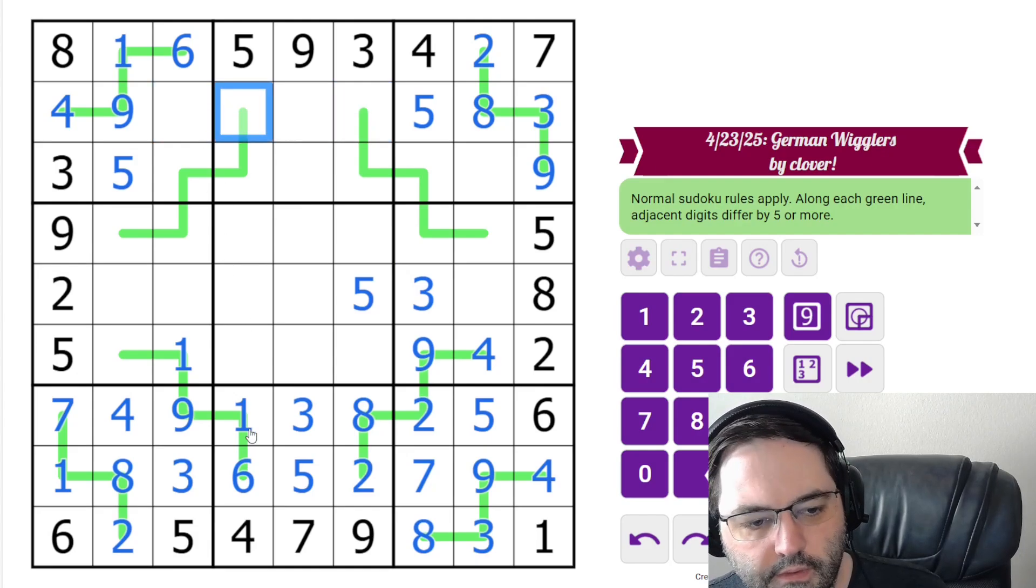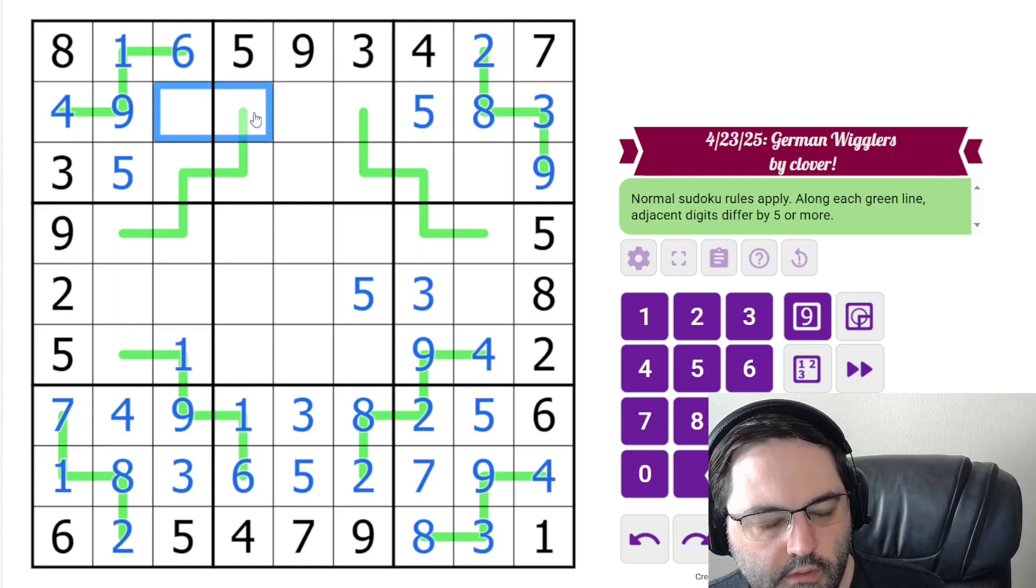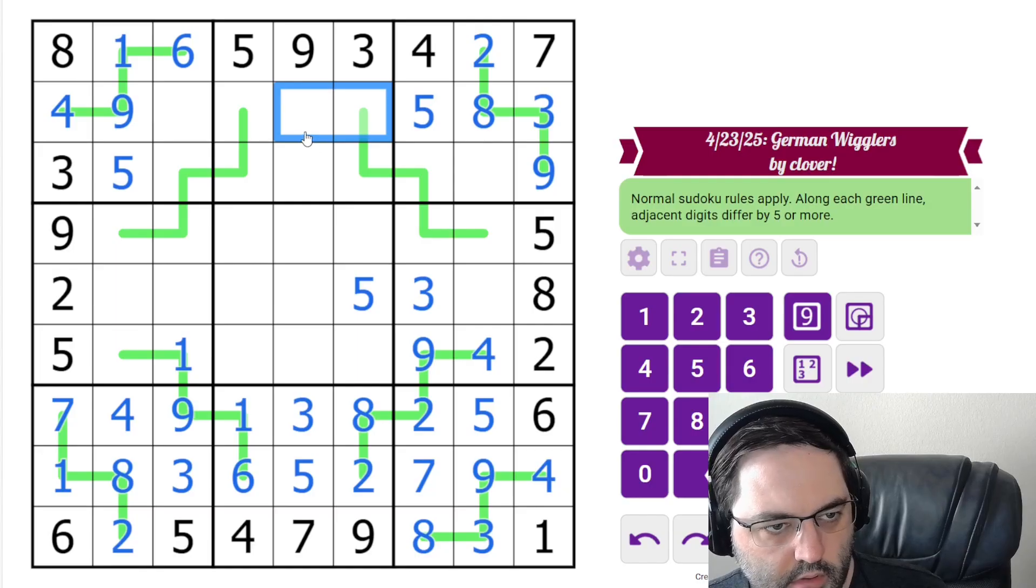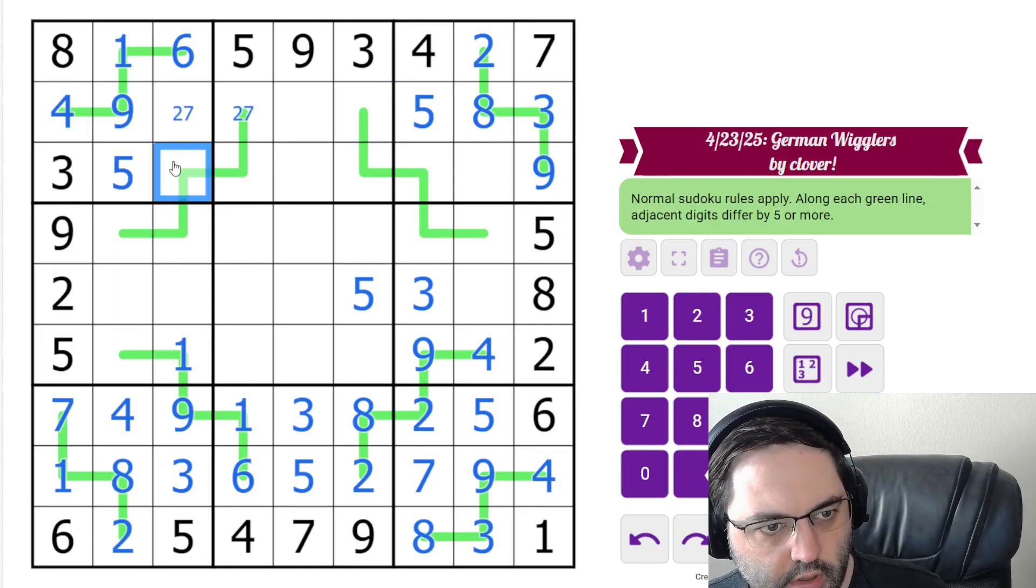So then, this is also 2, 7 because of the 1, 6 here. So 2, 7 pair here, 1, 6 pair here. I know I could pencil mark. I guess for clarity, I will.